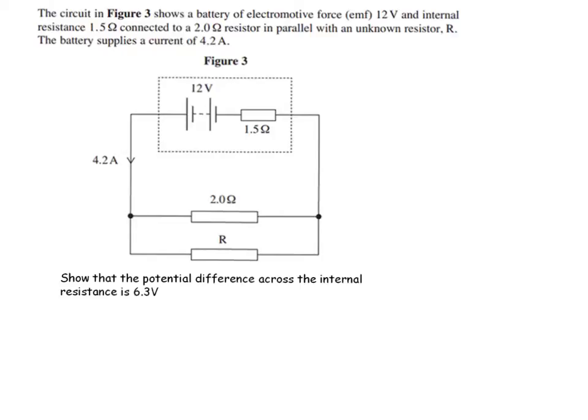This is question 6 from June 2013. It's a nice question because it incorporates parallel circuits and internal resistance. The first part asks you to show that the potential difference across the internal resistance is 6.3 volts.